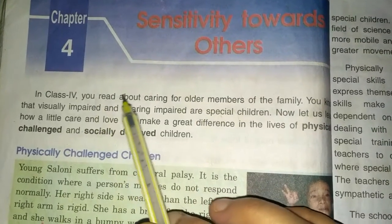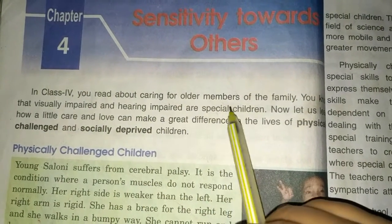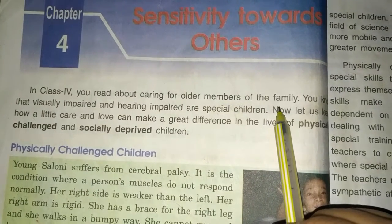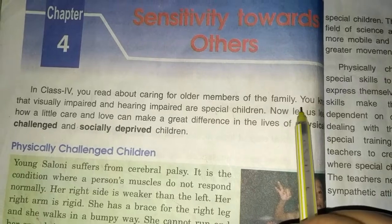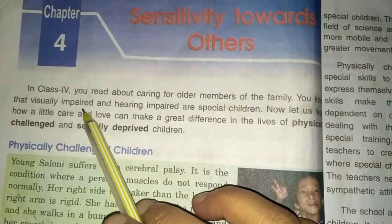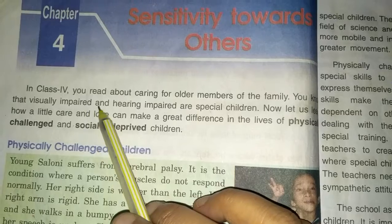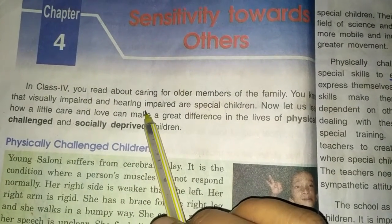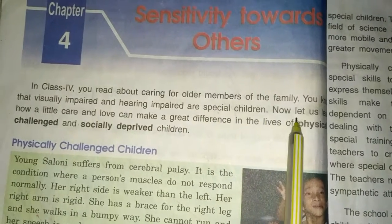In Class 4, you read about caring for older members of the family. There was also a chapter related to special children. Visually impaired means those who are not able to see properly, and hearing impaired means those who are not able to hear properly — these are called special children.